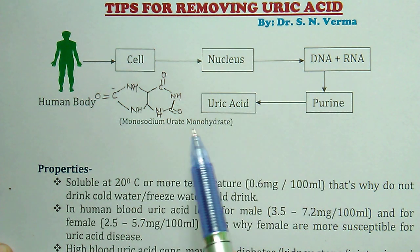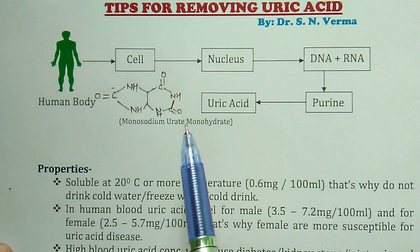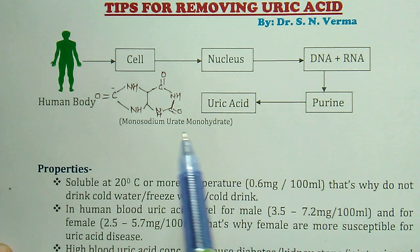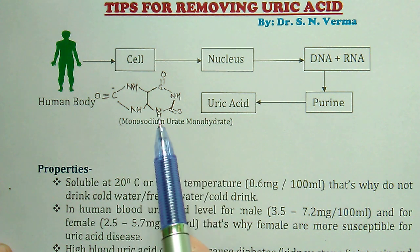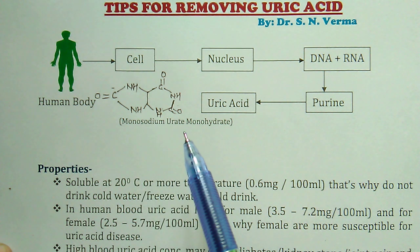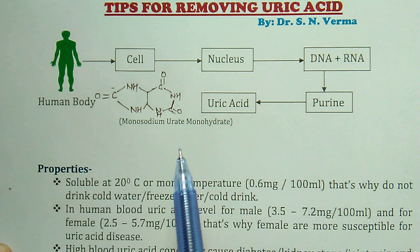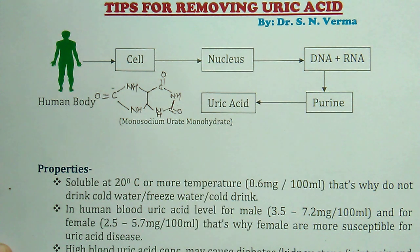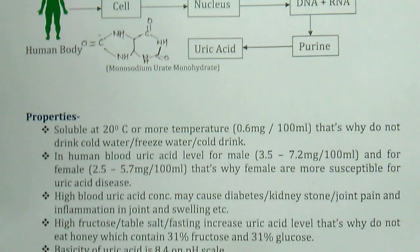Generally, uric acid is liberated from the body by dissolving in water along with urine. But due to certain metabolic disorders, monosodium urate monohydrate — uric acid — deposits in the non-vascular tissue of bone, which causes disfiguring of bone, joint pain, and inflammation. We will discuss how the properties of uric acid can help in removing it from the body.